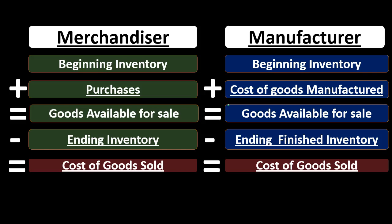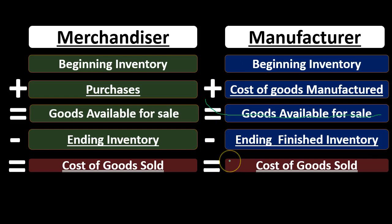The same applies if cost of goods manufactured is the unknown — use this formula and algebra rather than rewriting a new formula. Any component could be the unknown: ending inventory, beginning inventory, or cost of goods manufactured. Just write down the formula, identify what you don't know, and solve for it. You can also simplify by treating cost of goods available for sale as a subtotal and eliminating that intermediate step if it helps.